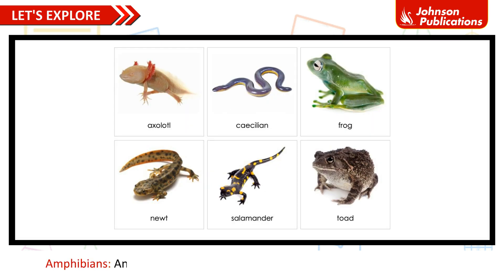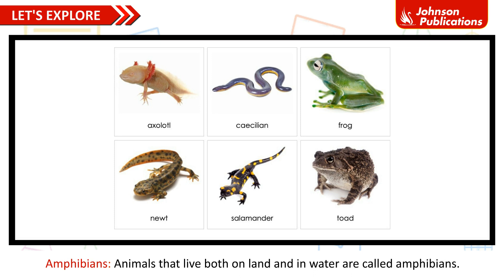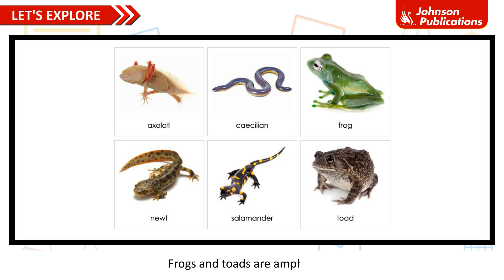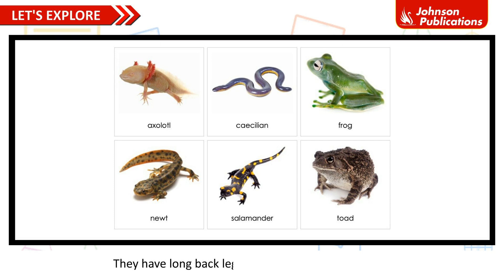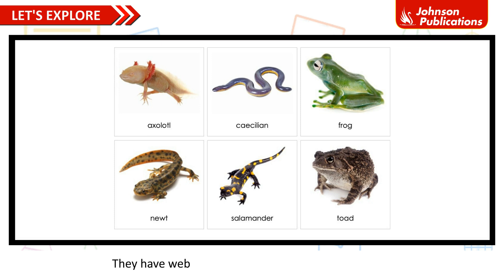Animals that live both on land and in water are called amphibians. Frogs and toads are amphibians. They have long back legs to move on land by jumping. They have webbed feet that help them swim in water.